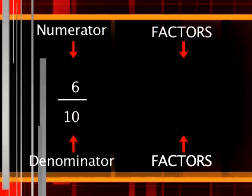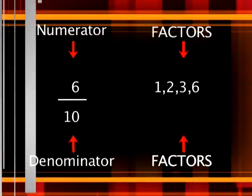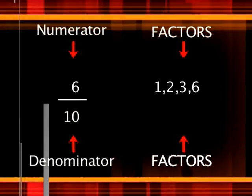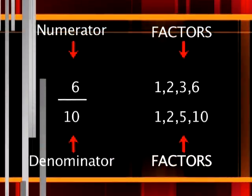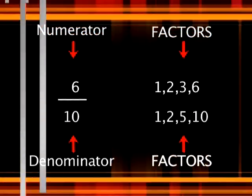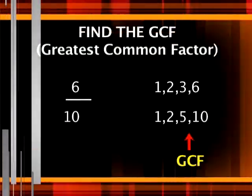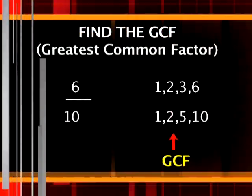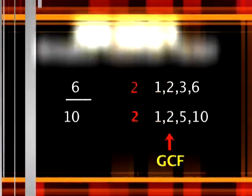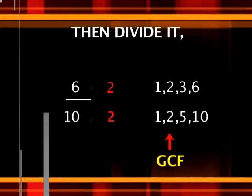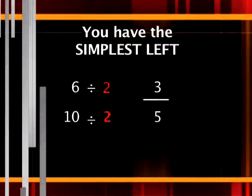Here's the factors of the numerator. What are the factors of the denominator? Find the GCF, then divide it and you have the simplest form.